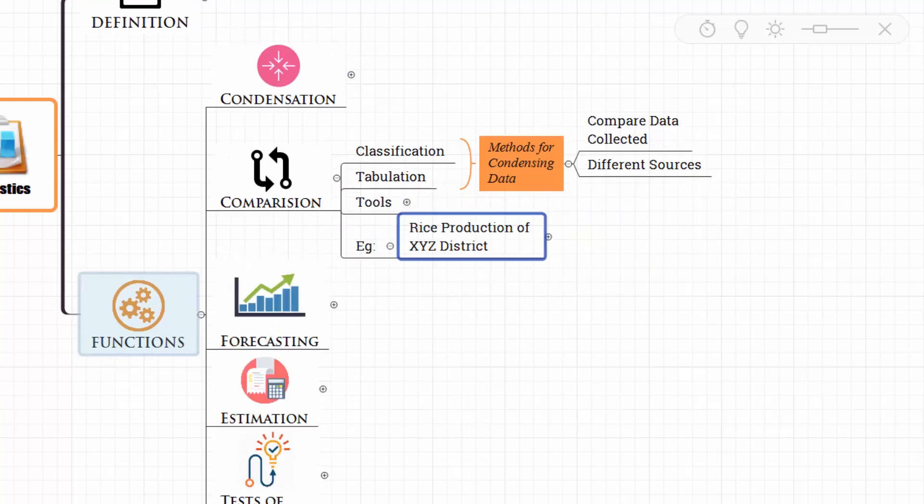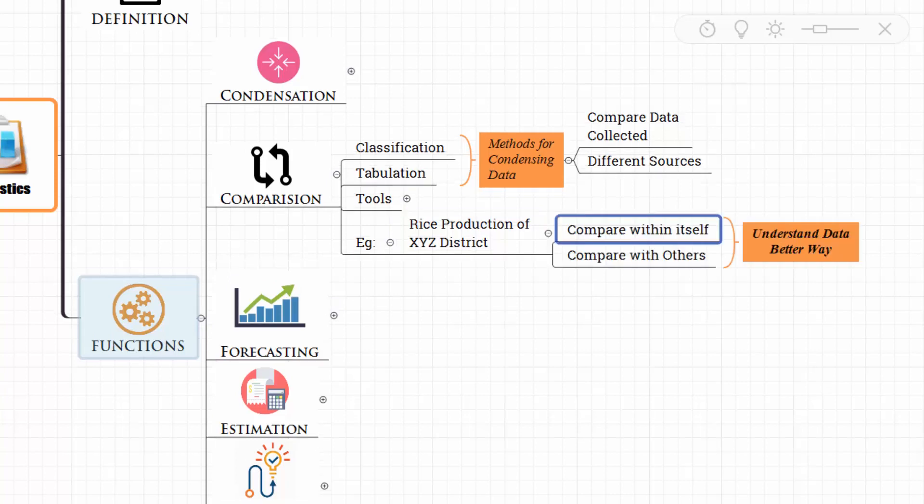Let me give you an example. Let's say we have rice production of a particular district. We can compare that with itself, we can compare with others, and we can understand the rice production in a better way.